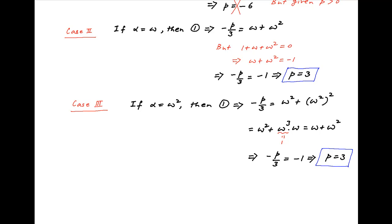The result from case 1 is not admissible because p is positive, and both case 2 and case 3 imply that p is equal to 3. Therefore the desired value of p is equal to 3.